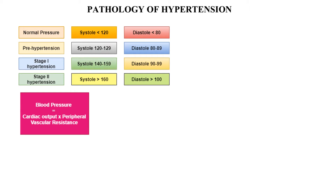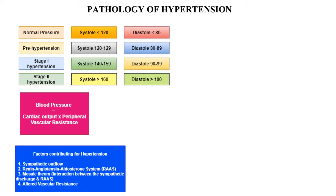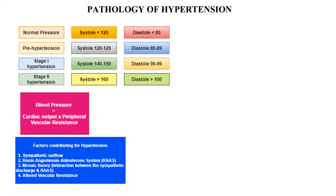Blood pressure is a mix of cardiac output and total peripheral vascular resistance. The factors contributing to hypertension are sympathetic discharge, the renin-angiotensin system, the interaction between sympathetic discharge and the renin-angiotensin-aldosterone system called the mosaic theory, and altered vascular resistance — the vascular changes occurring due to hypertension.